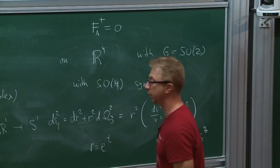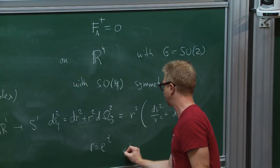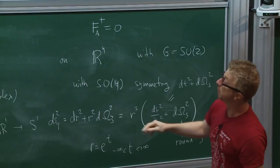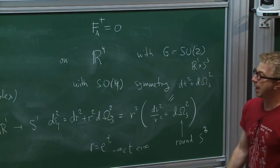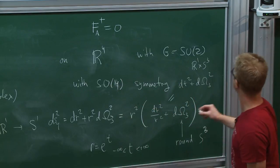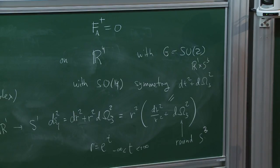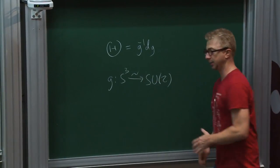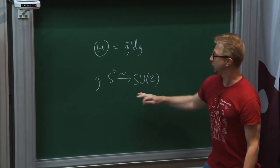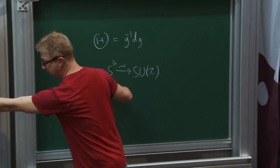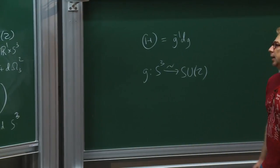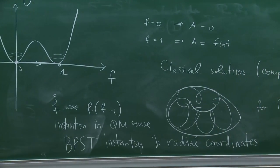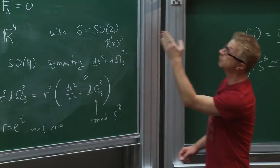By going to the coordinate which is the logarithm of the radius, with time running from minus infinity to plus infinity, the metric becomes simply R1 cross S3. The BPST ansatz corresponds to taking theta = G⁻¹ dG, where G is the map from S3 to SU(2) — the isomorphism that identifies the group SU(2) with the three-sphere. The scale factor F you get by solving the equation precisely corresponds to what BPST found.